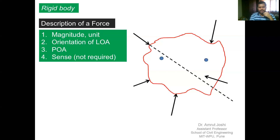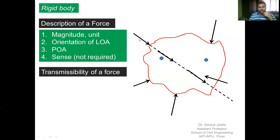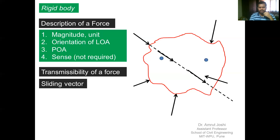Now let us discuss transmissibility of a force. If we take a force shown by a black arrow and translate it along its line of action, it produces precisely the same effect on all points of the body. Therefore, in principle, we have transmissibility of a force along its line of action. In this context, the force can be viewed as a sliding vector — as long as we slide the vector along its line of action, it has the same effect on all points of the body.